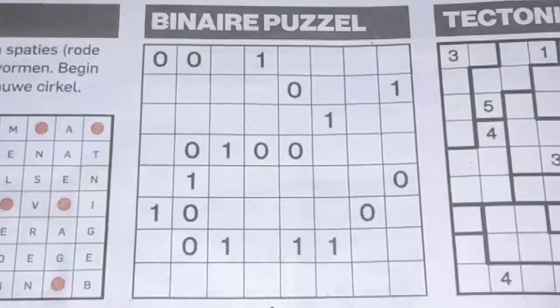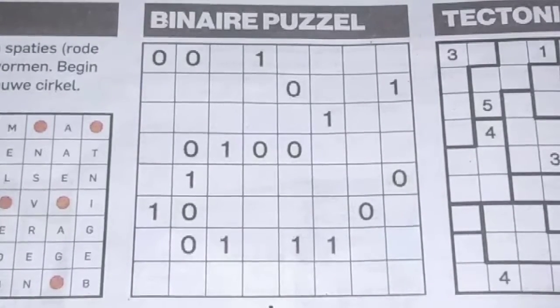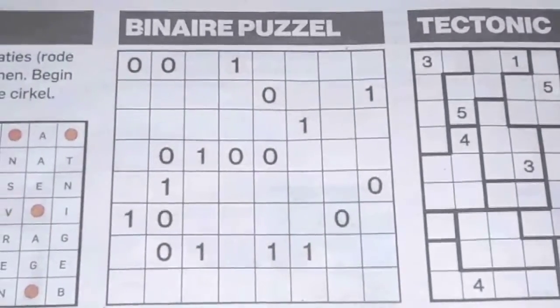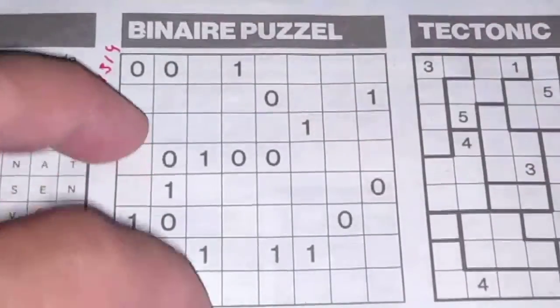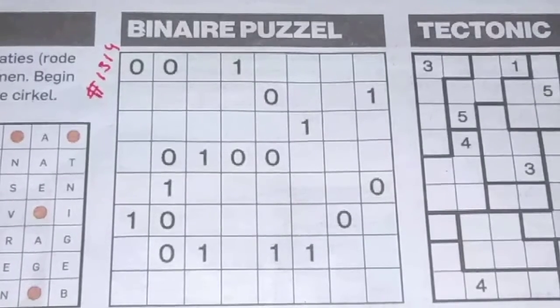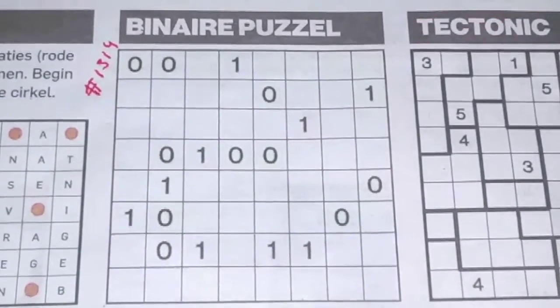Hello Sudoku friends, welcome back with the fifth puzzle in this edition of six puzzles in today's newspaper. It's Saturday August 8th, 2020. The fifth puzzle is a binary puzzle, number 1314. The previous one, number 1313, was a hard one — definitely a four-star puzzle — so let's see what kind of binary puzzle this one is.